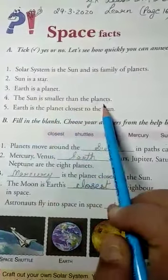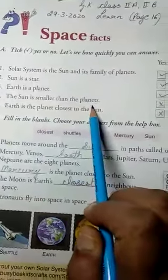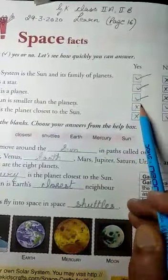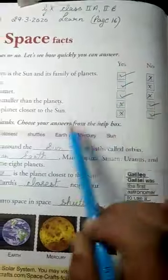Number four: The sun is smaller than the planets. The answer is no. So you have to put a cross in the yes column and put a tick mark in the no column.